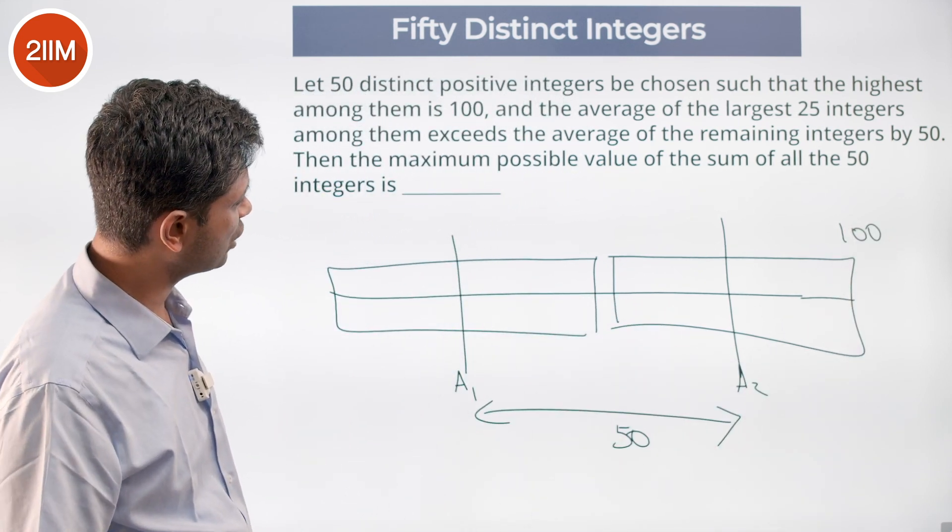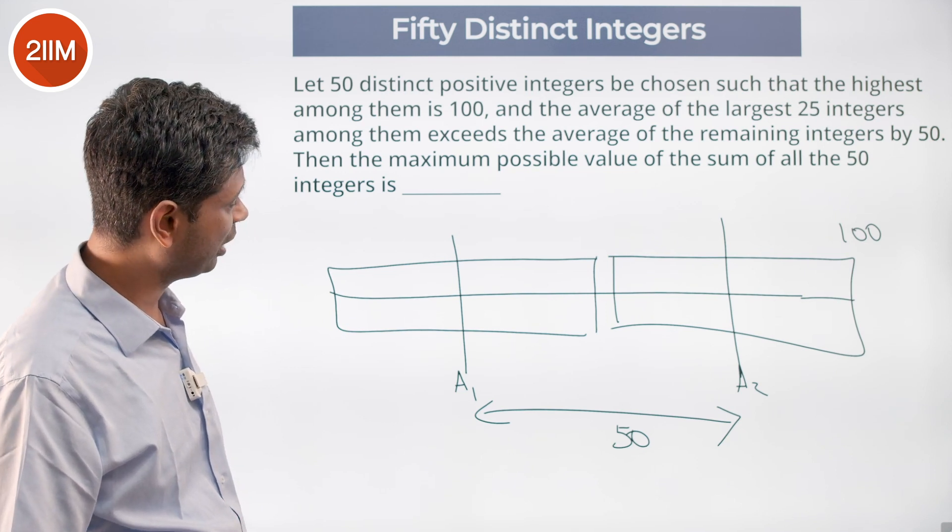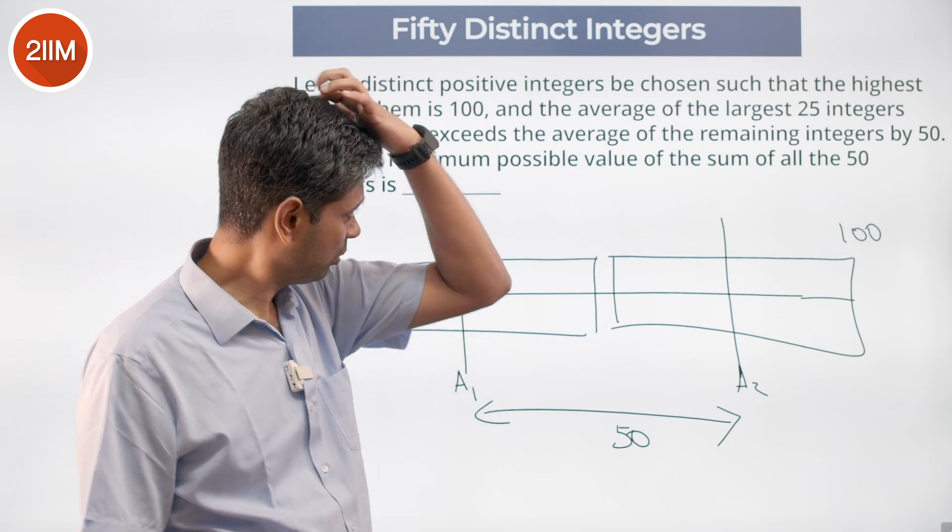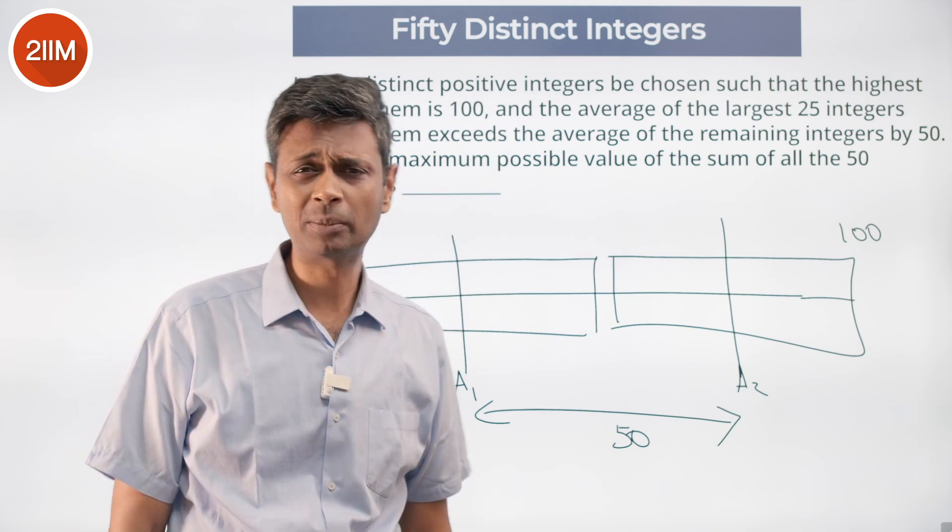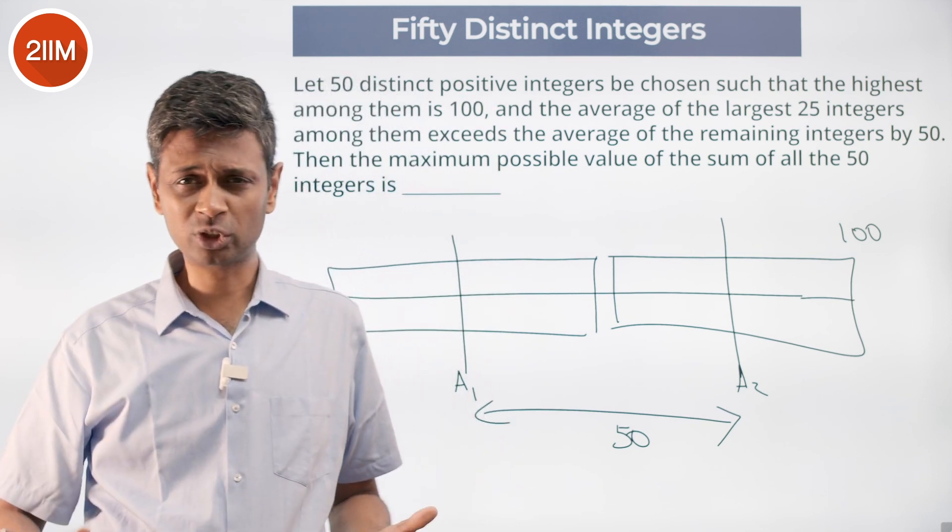The average of the largest 25 integers among them exceeds the average of the remaining by 50. You want to find the maximum possible value of sum of all. Want it to be as high as possible. They are distinct.